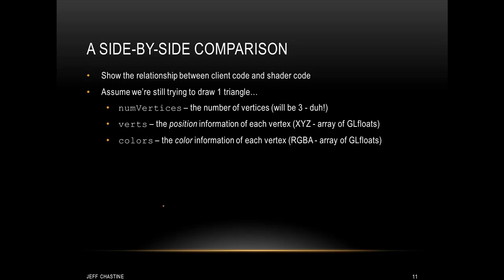To get a better understanding of what's going on, it's always good to see an example. In this case, we're going to visualize the buffer, but we're also going to show the relationship between the client code, the OpenGL code, and the shader code. Let's keep the assumption that we're still trying to draw that one triangle from the beginning of this tutorial. To simplify the explanation, I'm going to declare a couple of variables here. The first one is numVertices, which is clearly the number of vertices — 3. There are also two arrays of GLfloats: verts, which is the position information for each vertex, and colors, which is the color information for each vertex. Notice that verts is organized as a series of x, y, z positions, whereas colors is organized as a series of RGBA.